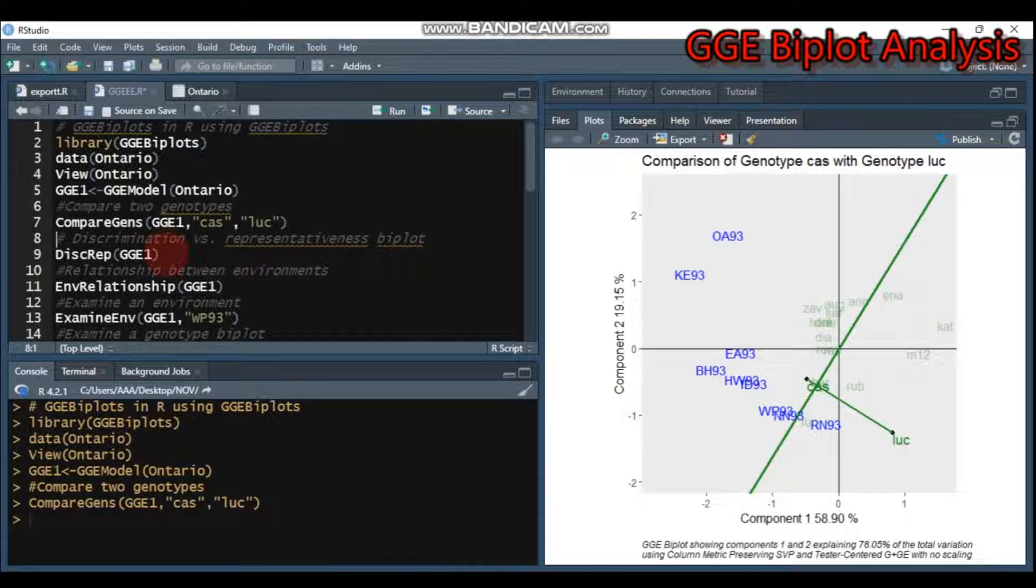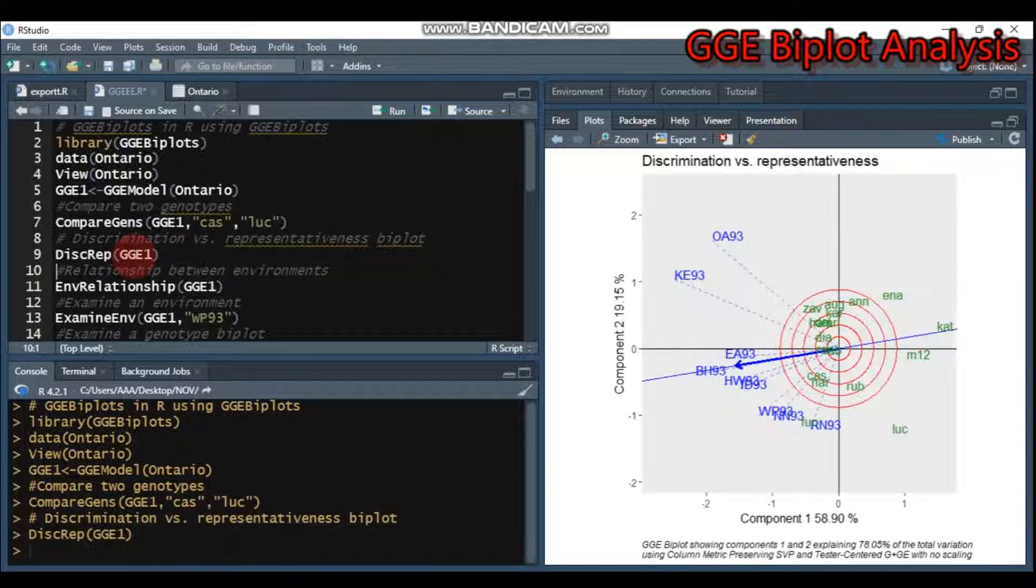The second biplot we're going to see is to look for discrimination versus representativeness. In order to do that, you have to use the disk.rep function, then immediately put the model that we created before, which is GGE1. Type this and send to R Studio, and you will get this attractive biplot.